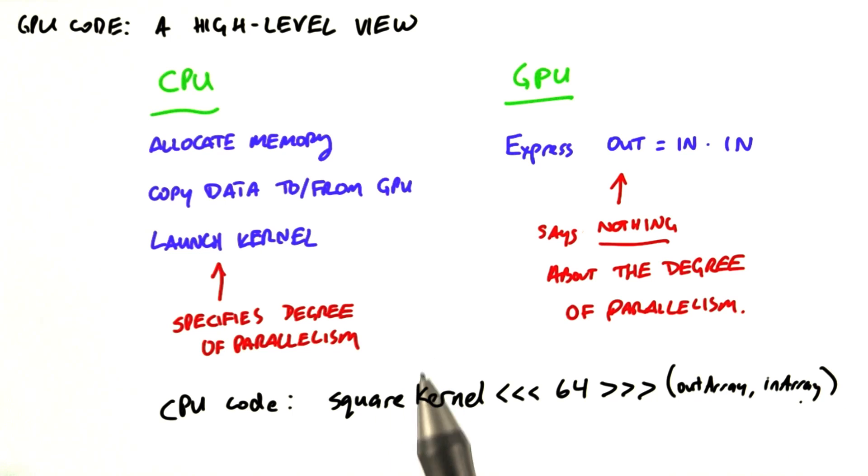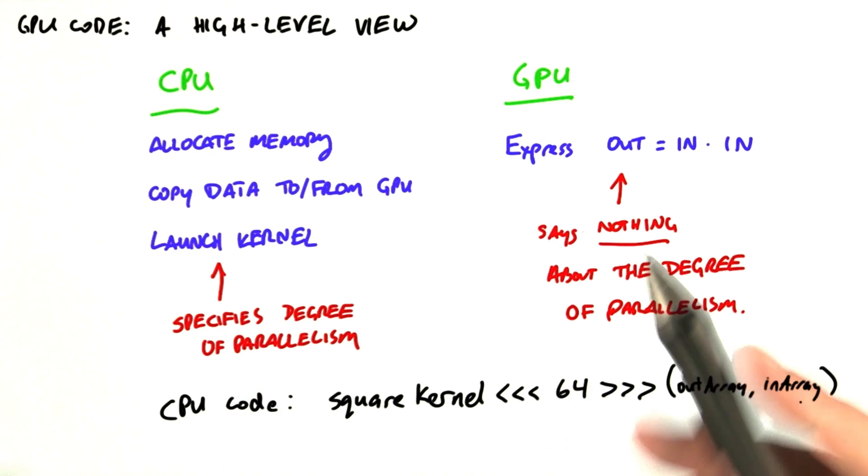Just to get our terminology straight, what we're doing here is launching a kernel called square kernel on 64 threads. And each of those 64 instances of the kernel will perform one of the 64 square operations that we need to do.